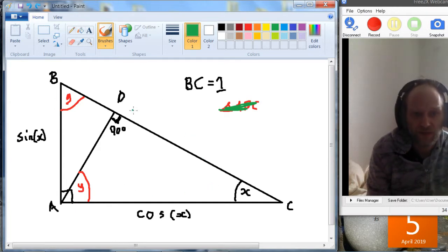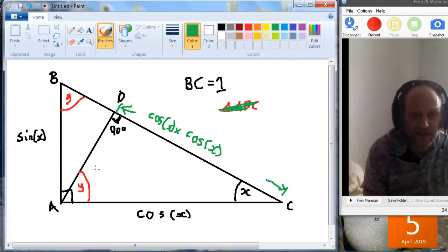So this length here, from D to C, is actually going to be cos X times AC, but we know AC already, AC is cos X, so it's actually just cos X times cos X. And we can do the same for AD, this is going to be cos X times sine X.